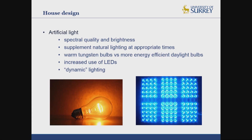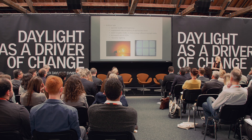We can supplement daylight with different artificial light, looking at spectral quality and brightness. There's been a move away from very warm tungsten lighting toward more energy-efficient bulbs and LEDs, which are very blue-enriched and can have a very positive effect. There's also the option of dynamic lighting where both the intensity and the wavelength of light can be modulated over the day depending on the effect you want to have.